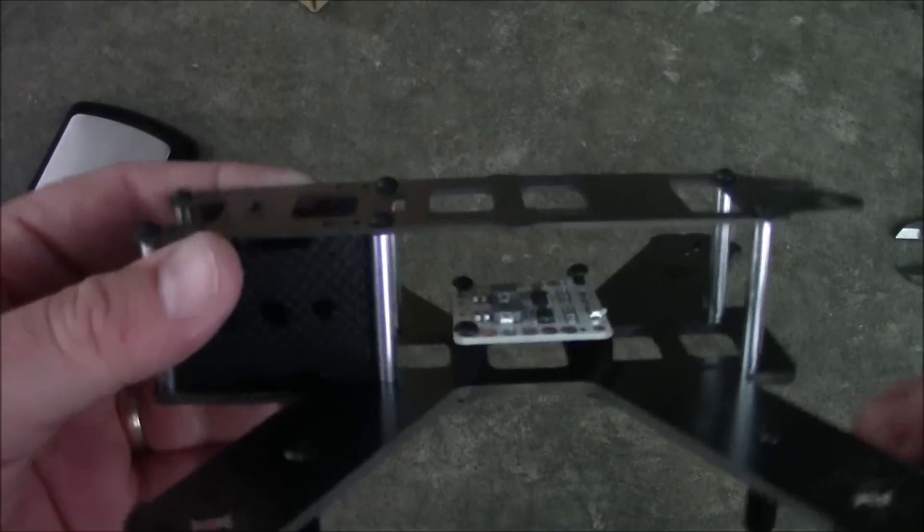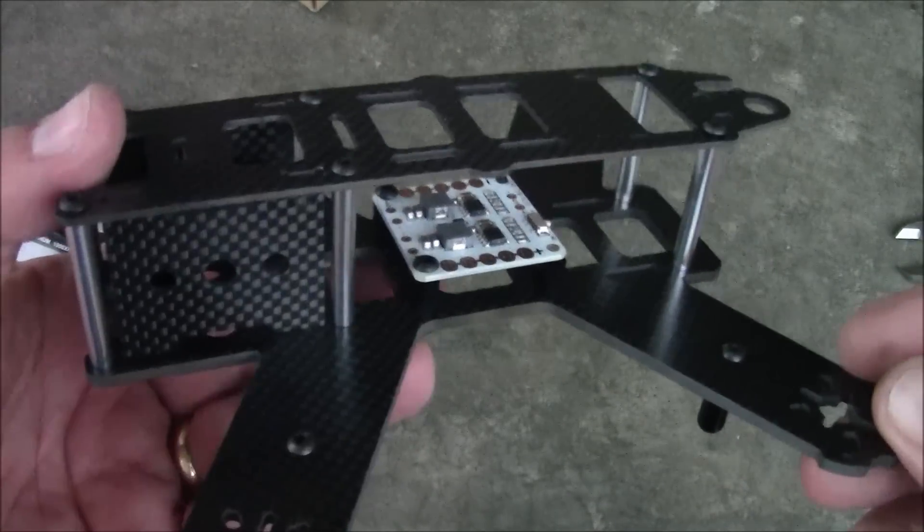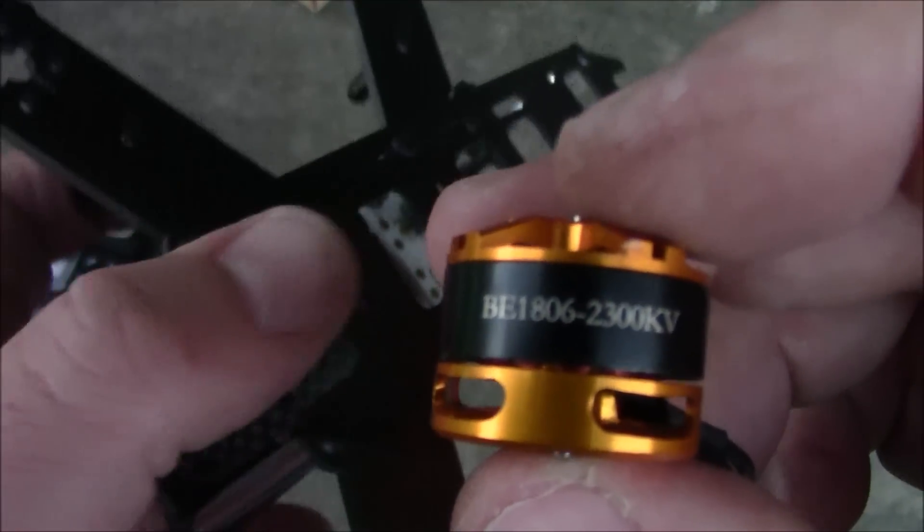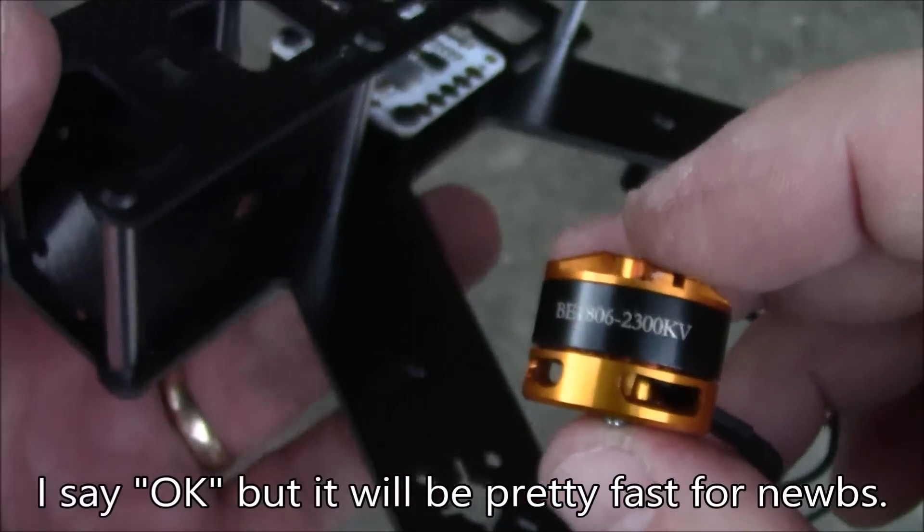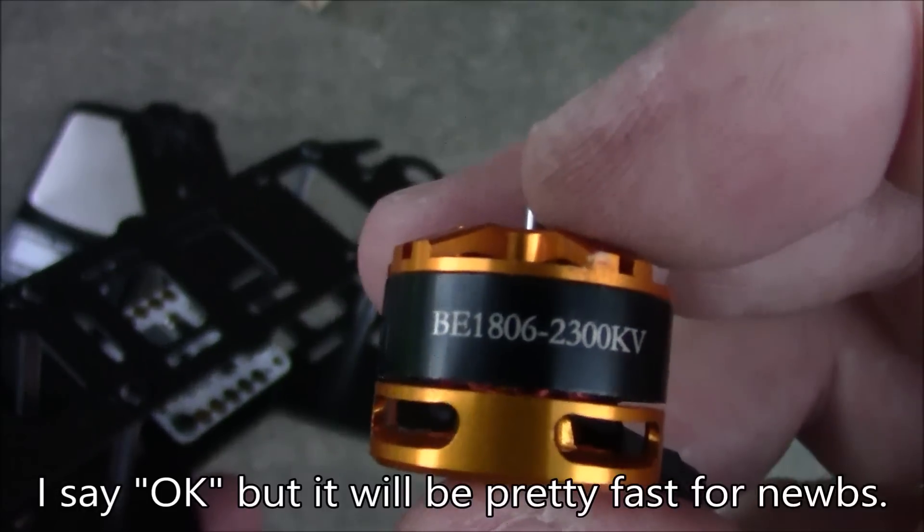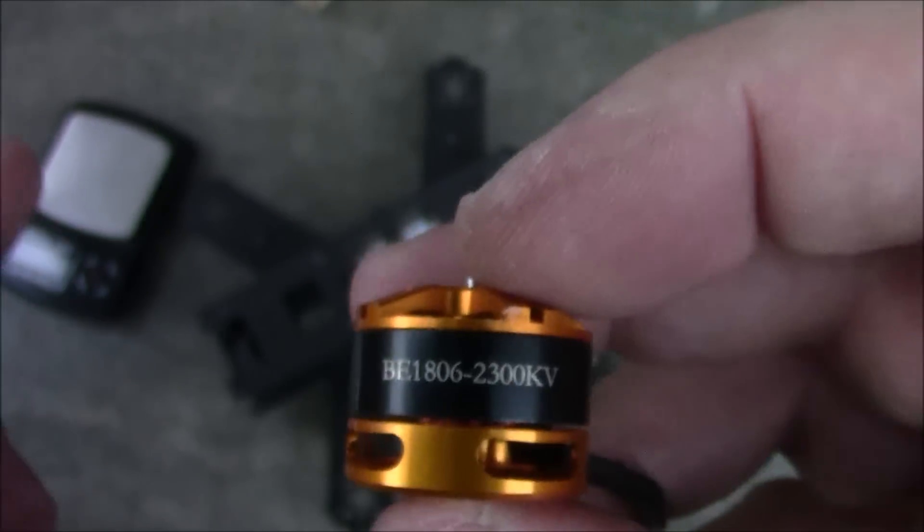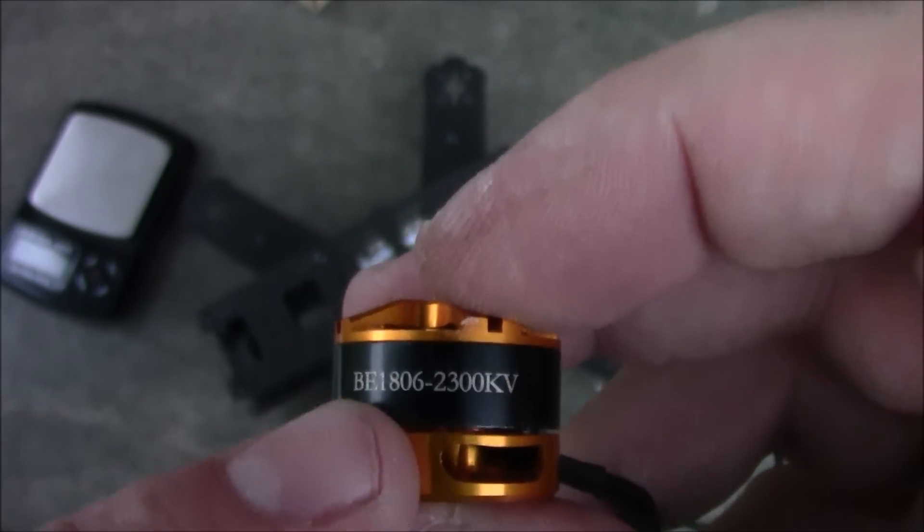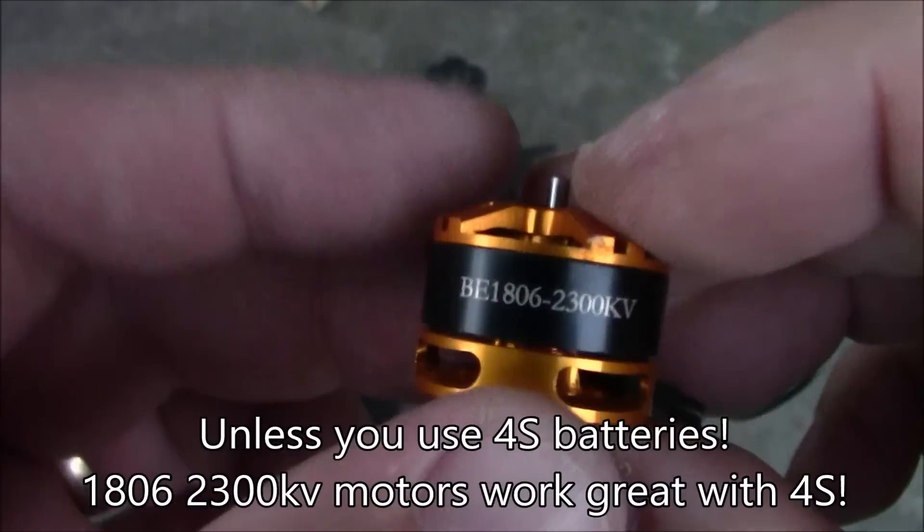When you go to put propellers on this you're going to want to use something with a high KV. If you use these 1806 2300s like this one you're going to get okay performance and it's going to spin four inch propellers pretty easily. But you just save yourself a lot of trouble. And then what I would recommend are some 1806 2600 or 2700 motors if you can find them.